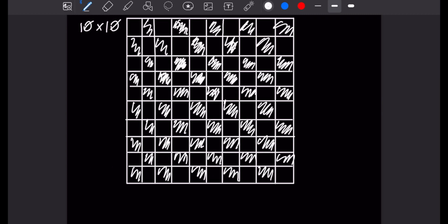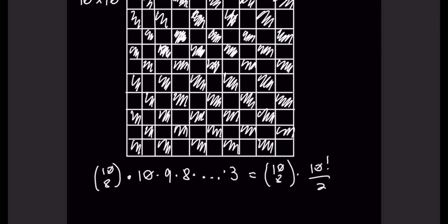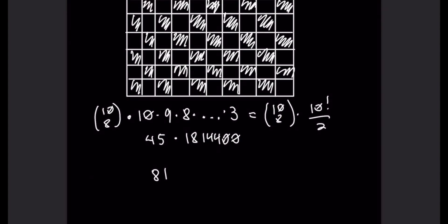Now let's look at the 10×10 board. We focus on the columns: there cannot be two rooks in the same column, and the rooks must appear in eight different columns out of ten, so we choose eight columns in 10 choose 8 ways. Then we place rooks in rows: the first rook has 10 row choices, the second has 9, and so on down to 3 for the last rook. Rewriting that as 10 choose 8 times 10 factorial over 2: 10 choose 8 is 45, and 10 factorial over 2 is 1,814,400, giving a grand total of 81,648,000 different arrangements.